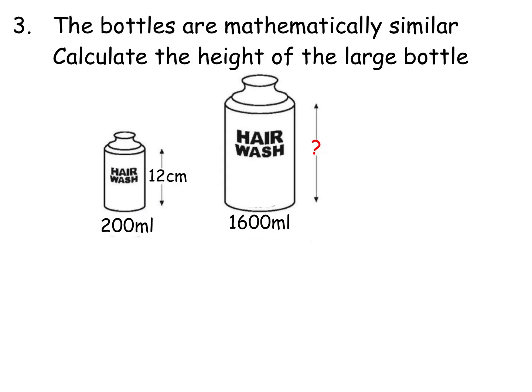One last example. We've got two mathematically similar bottles. Calculate the height of the larger bottle. So this one is based on volume. I said, right, well, I would have taken my scale factor and I would have taken x over 12 volume. I would have cubed it, multiplied by 200 and got the answer 1600.